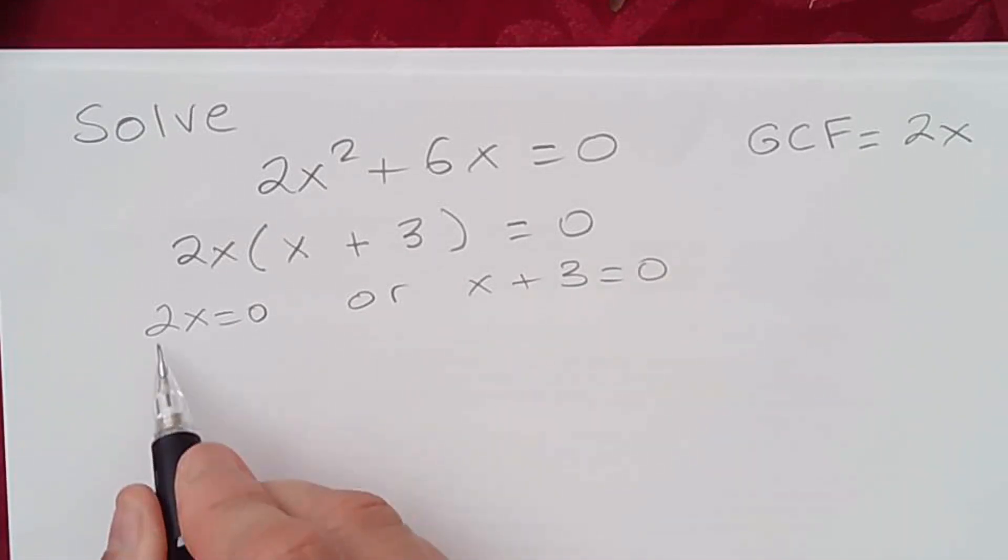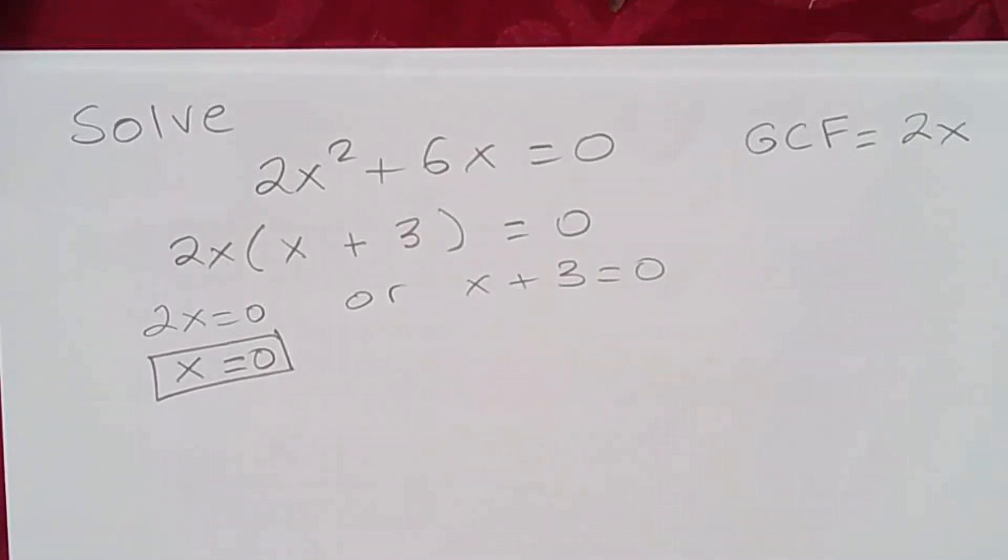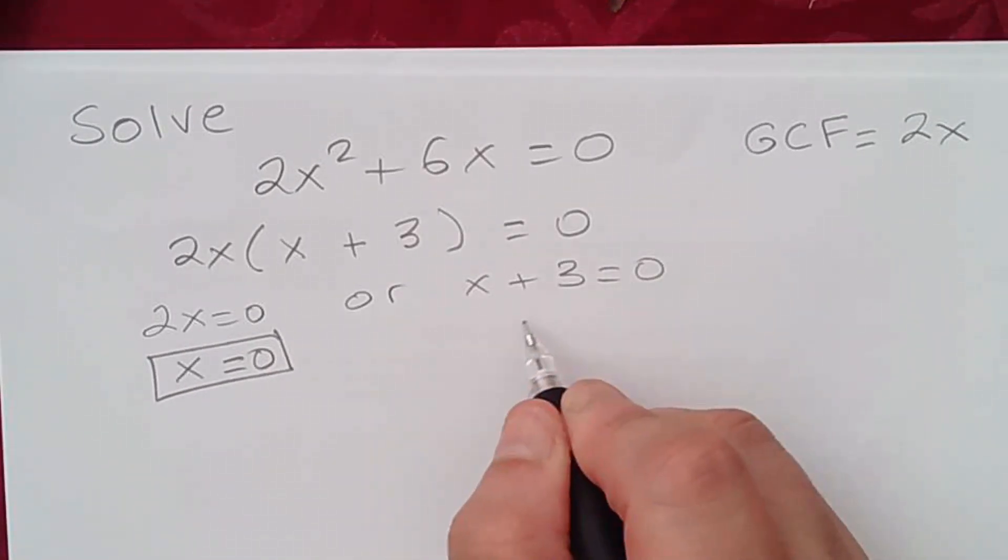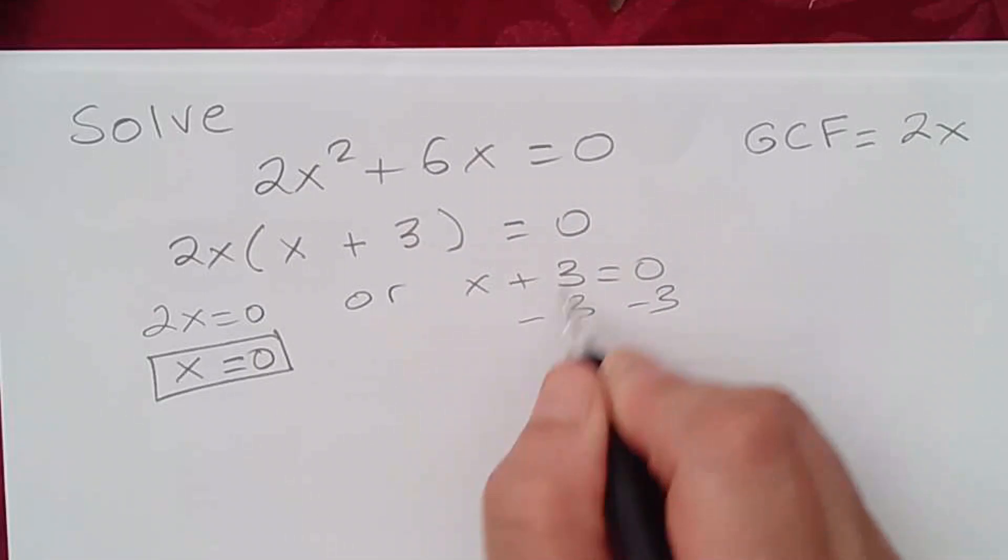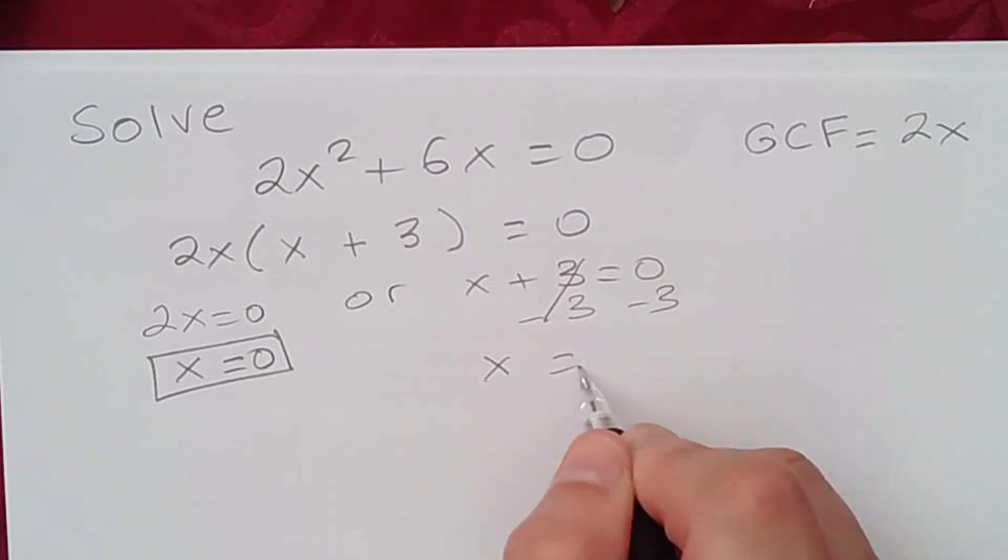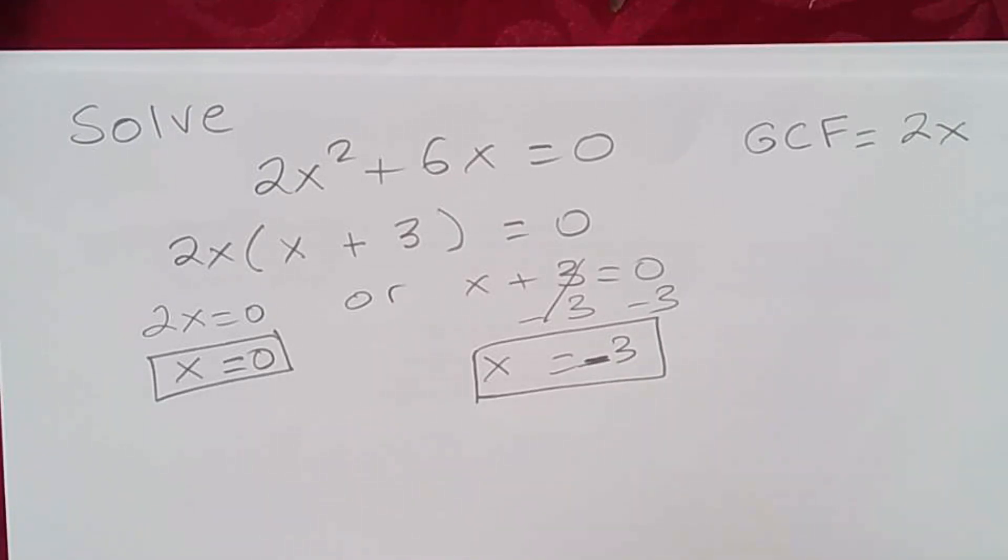Now if 2x = 0, then x must equal 0. x = 0 is one solution. Subtracting 3 on both sides of the equation, we get x = -3. So the solutions to the equation are x = 0 and x = -3.